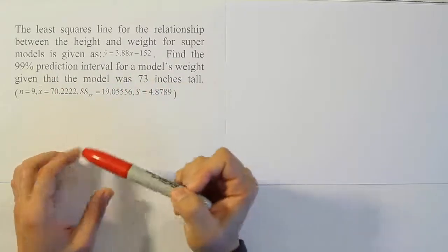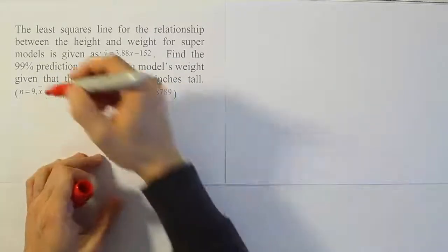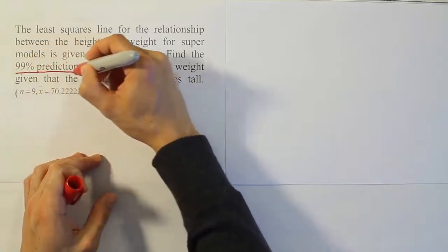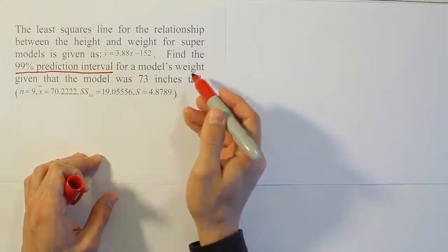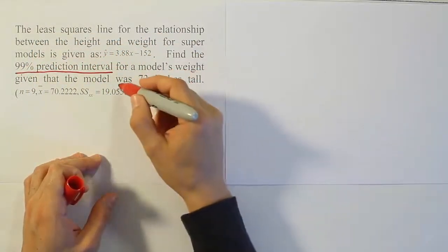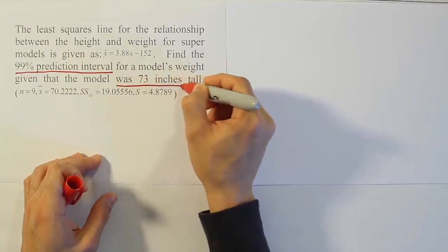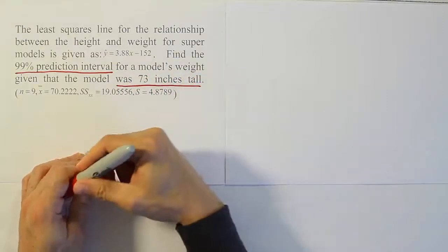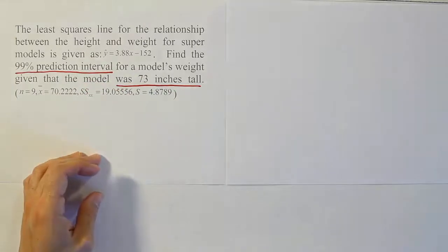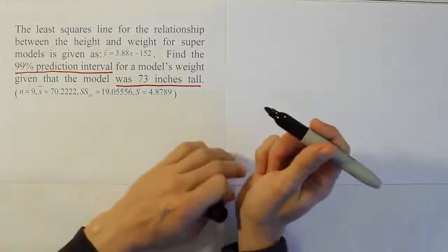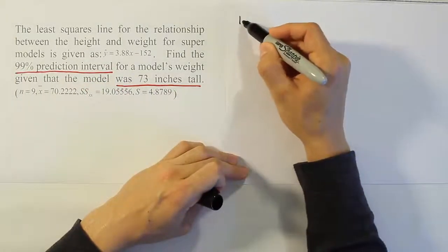We have the summary data provided below, and reading carefully we're looking for the 99% prediction interval for a model's weight given that the model was 73 inches tall. It's a prediction interval we're forming, so our first step should be to get the point estimator for the problem and to write down alpha.